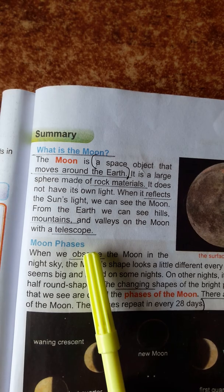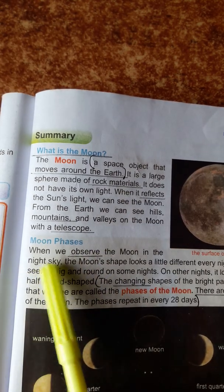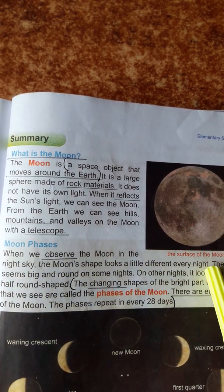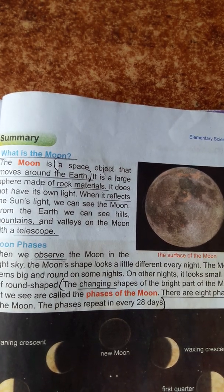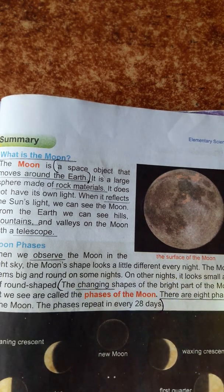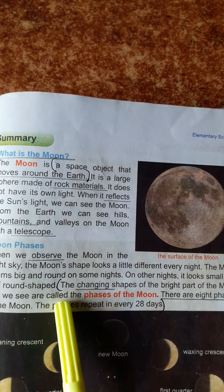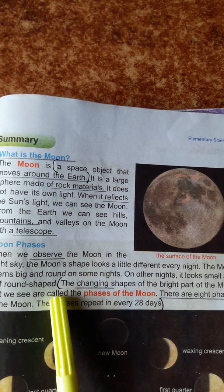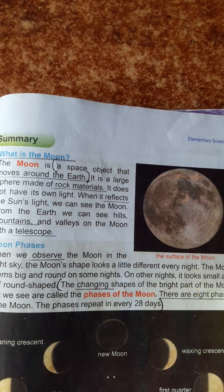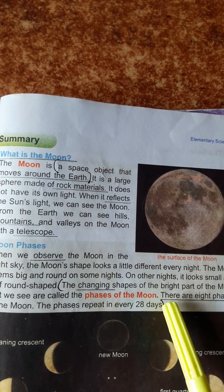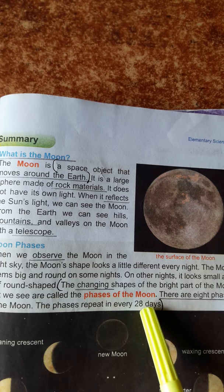Moon phases — chadir dasha ba parja shumuhun. When we observe the moon in the night sky, the moon's shape looks a little different every night. The moon seems big and round on some nights. On other nights, it looks small and half round shaped. The changing shapes of the bright part of the moon that we see are called the phases of the moon.